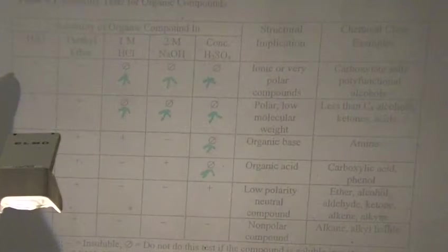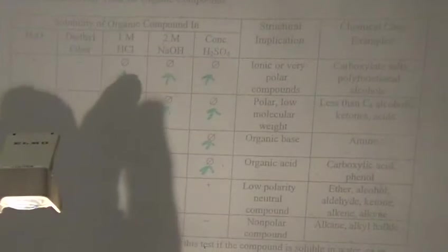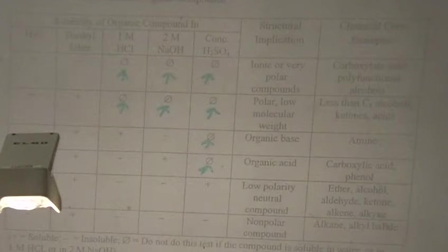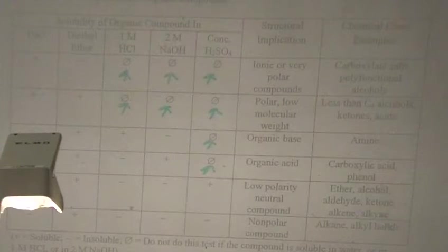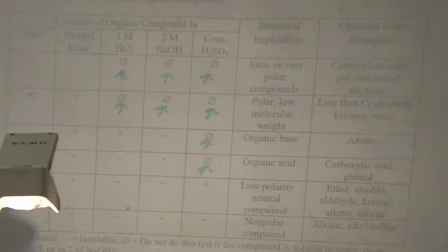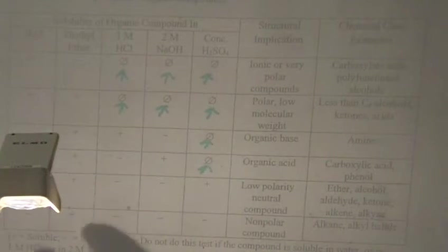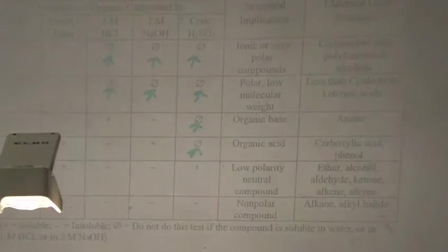Use a new test tube for each solubility test and follow the tests in order. If you get a result pattern — for example a positive water test and negative diethyl ether — certain symbols mean you're not going to do the rest of the tests. Follow the pattern, and if it tells you not to do a certain test, don't do it. A lot of that has to do with reactivity with the acids and bases — we don't want you to have an unexpected reaction with your unknown. Have this table in your notebook as well as in your lab manual.